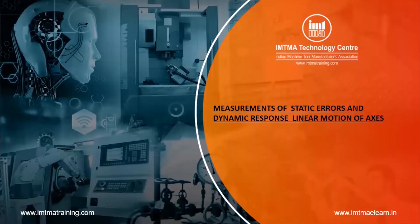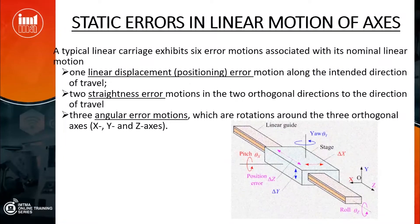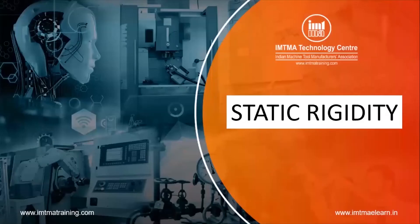Starting with static error measurement and dynamic responses of linear motion axes: a typical linear carriage exhibits six error motions associated with its normal movement. One is linear displacement error — the positioning error in the direction of movement. Two is straightness error, perpendicular to the movement. Three is angular errors: pitch, yaw, and roll — rotations around the three orthogonal axes.